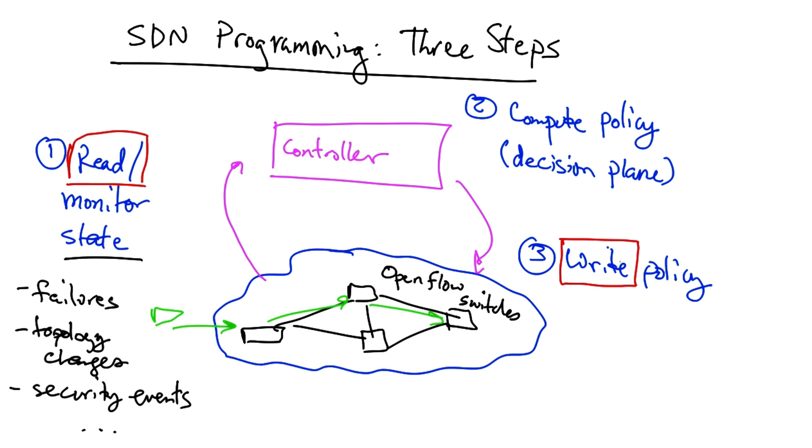Both reading and writing network state can be challenging because OpenFlow rules are simple match action predicates. So it can be very difficult to express complex logic with these rules. If we want to read state that requires multiple rules, expressing a policy that allows us to read such a state can be complicated without more sophisticated predicates.